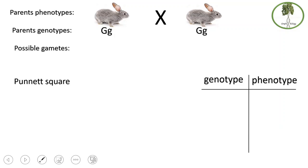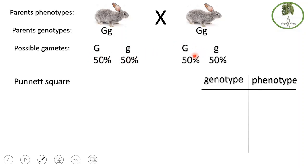Another application: here we have two gray rabbits, possibly the offspring of the first cross, which are heterozygous. The parent genotypes are capital G small g and capital G small g. The possible gametes from each parent are either capital G or small g, with a 50-50 chance each. Since we have more than one type of gamete from each parent, we need to use a genetic diagram called a Punnett square.